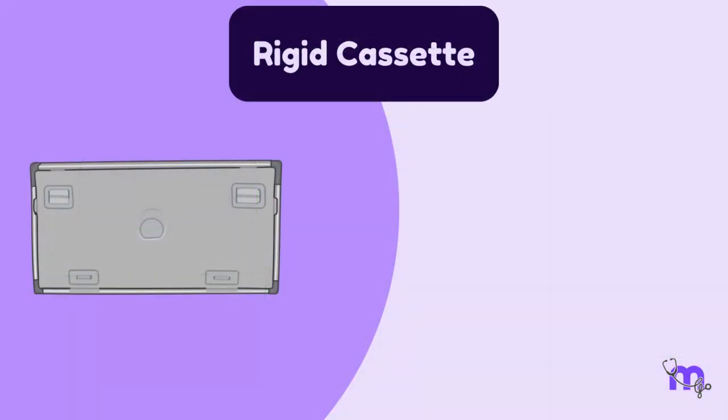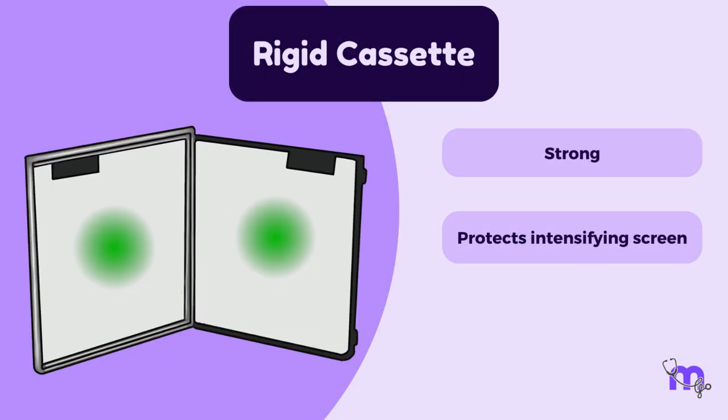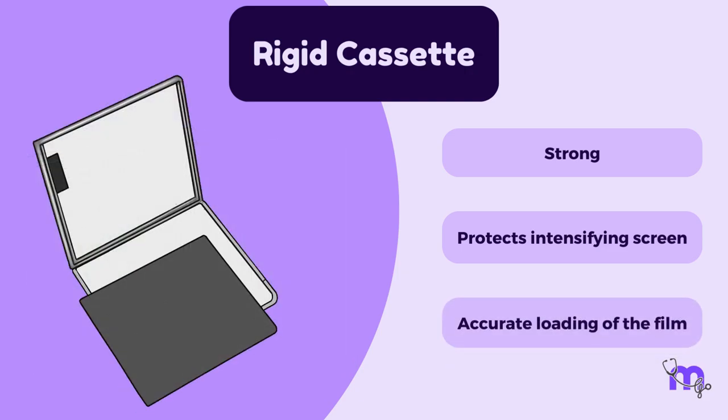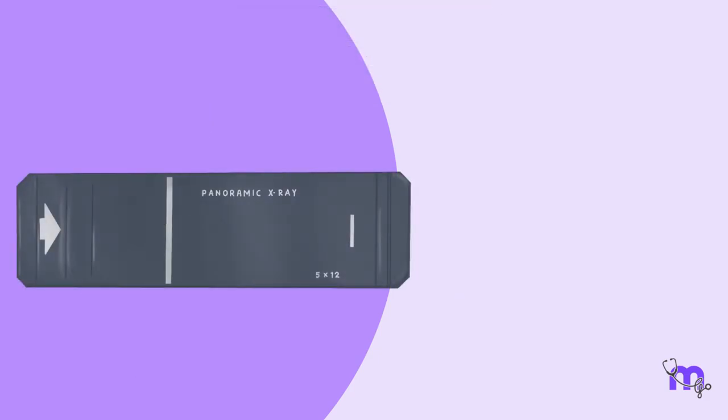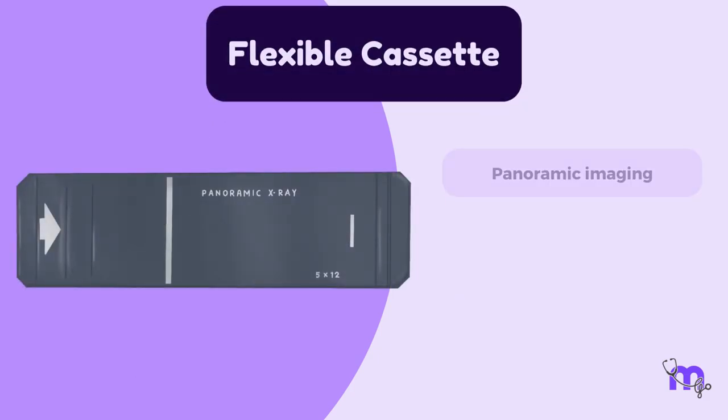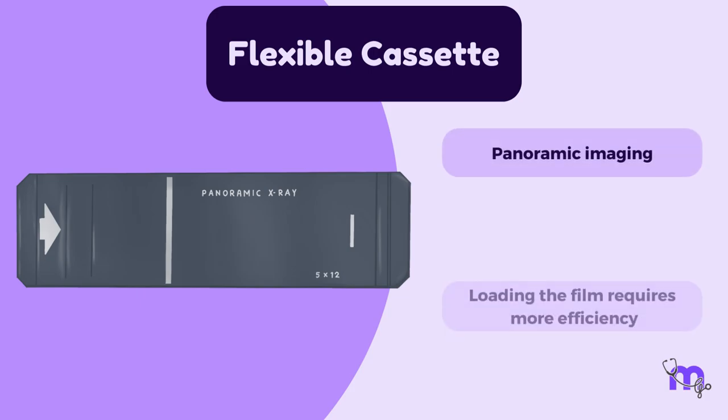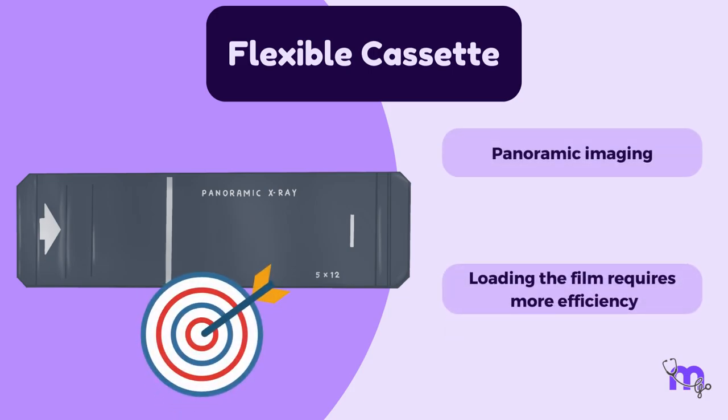A rigid cassette is stronger, protects the intensifying screens from damage and makes the loading of the film accurate. On the other hand, flexible cassettes are only used for panoramic imaging and loading requires more efficiency by the operating personnel.